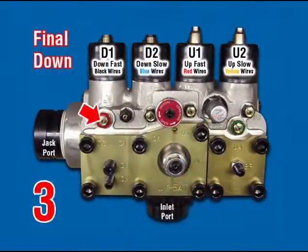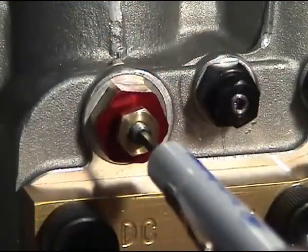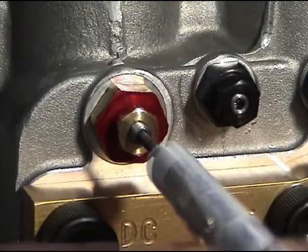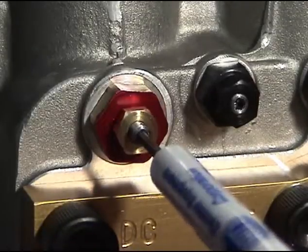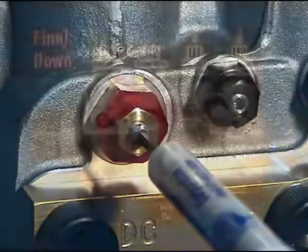DC — down closing. Cycle empty car and observe down stop. Turn DC clockwise for a softer stop, or counterclockwise for a firmer stop, until the down stop is satisfactory.